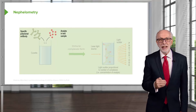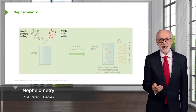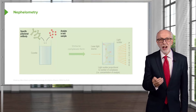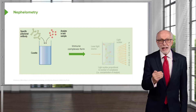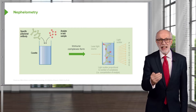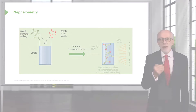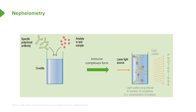In nephilometry, the presence of an analyte in a test sample can be detected. Specific polyclonal antibodies are mixed with the sample containing the suspected analyte. These are added to a cuvette and immune complexes will form if there is the analyte for that particular antibody present in the test sample. Laser light is then shone onto the cuvette and there will be light scatter depending upon the amount of immunoprecipitate that is formed. The light scatter is detected using a photodiode and is proportional to the concentration of the analyte.